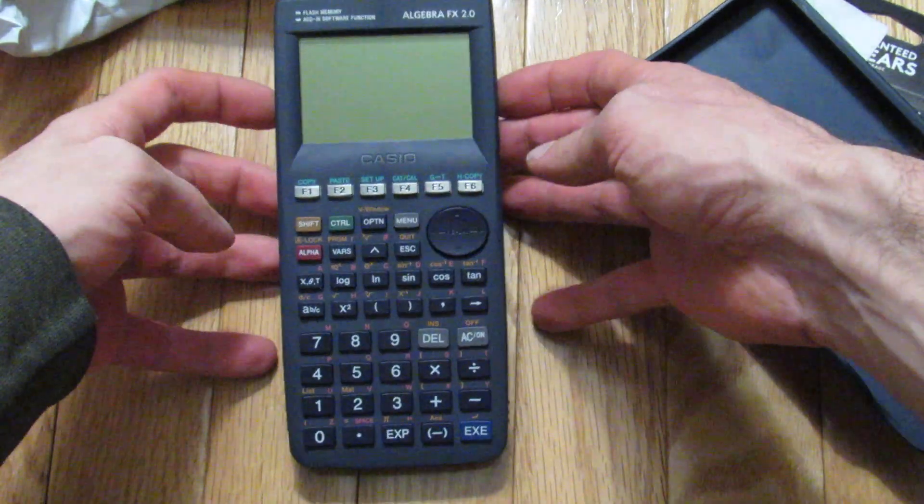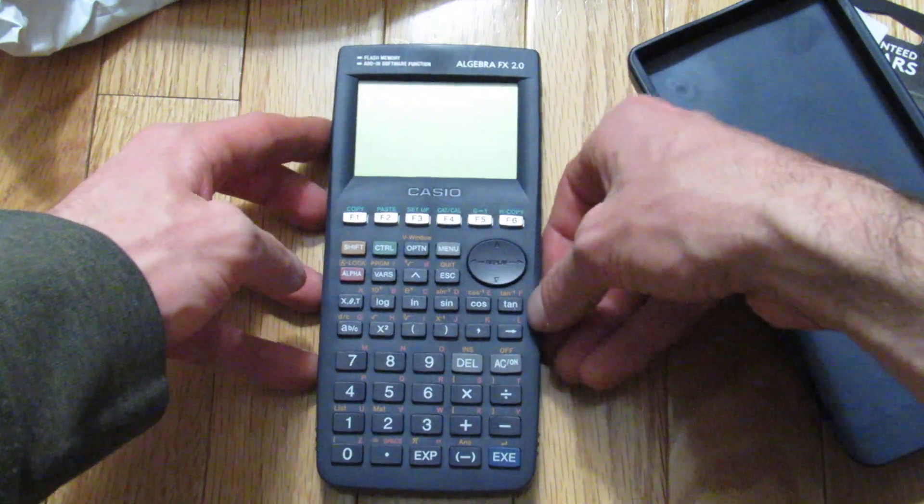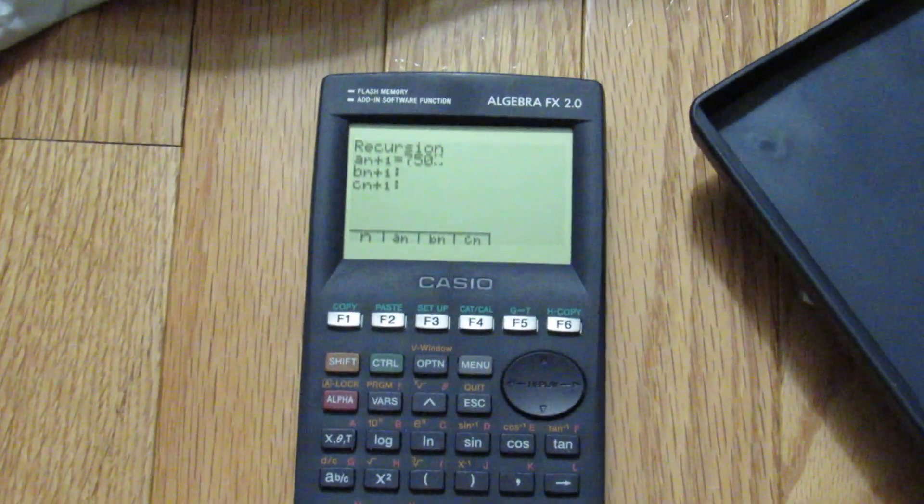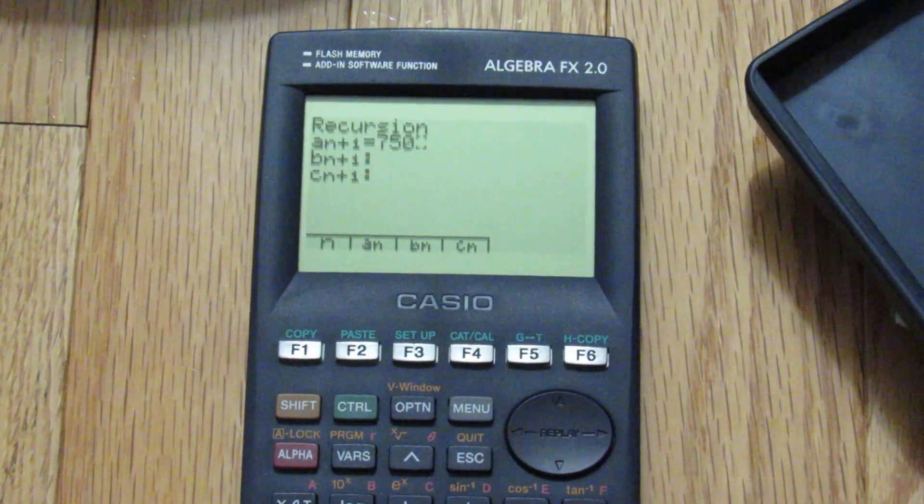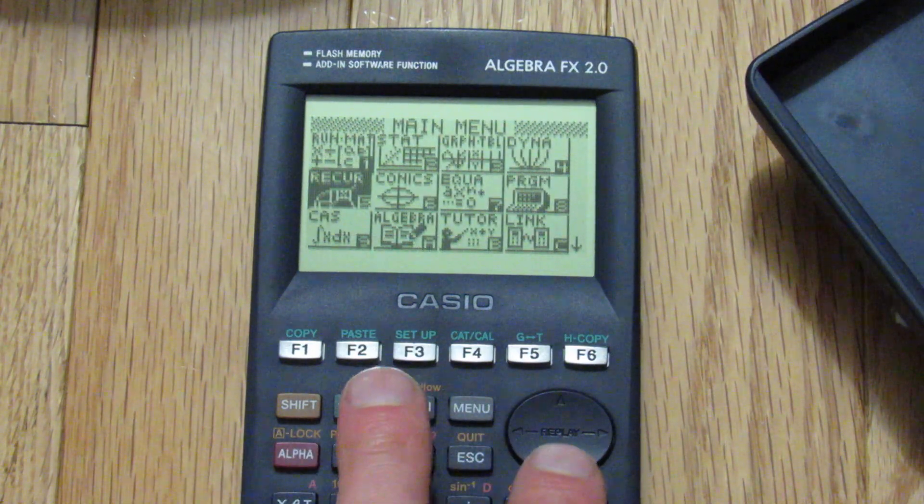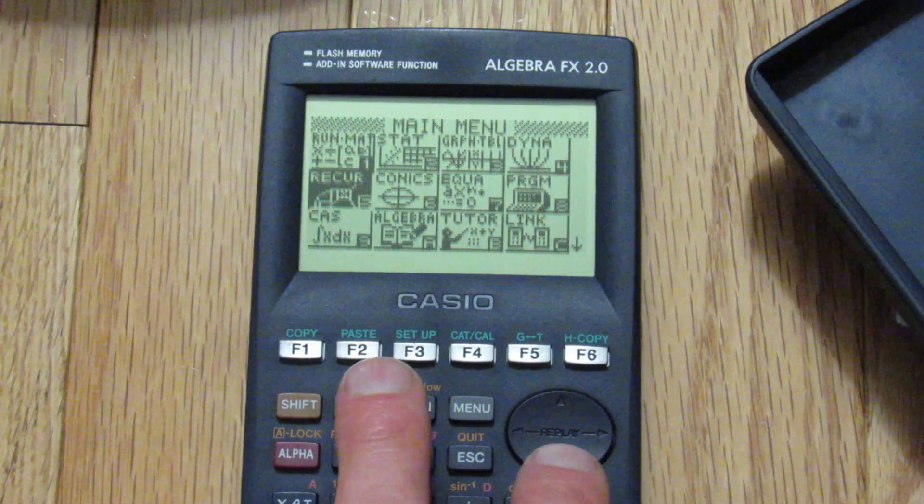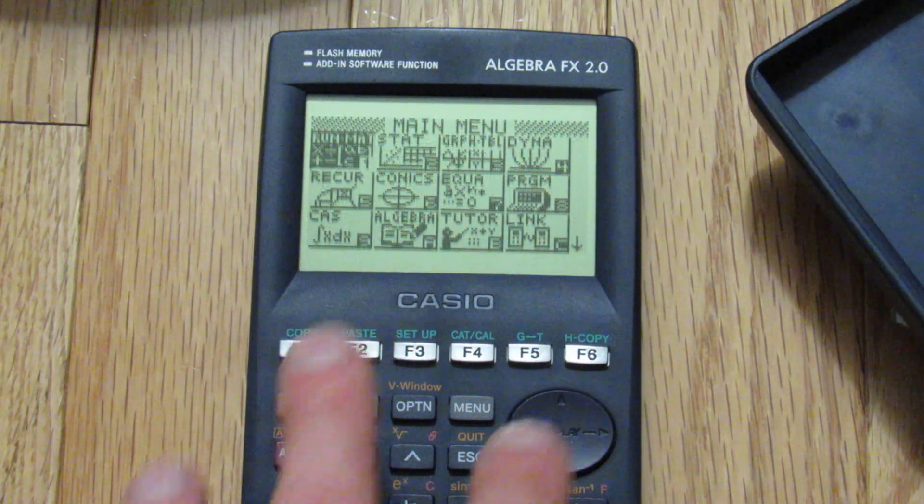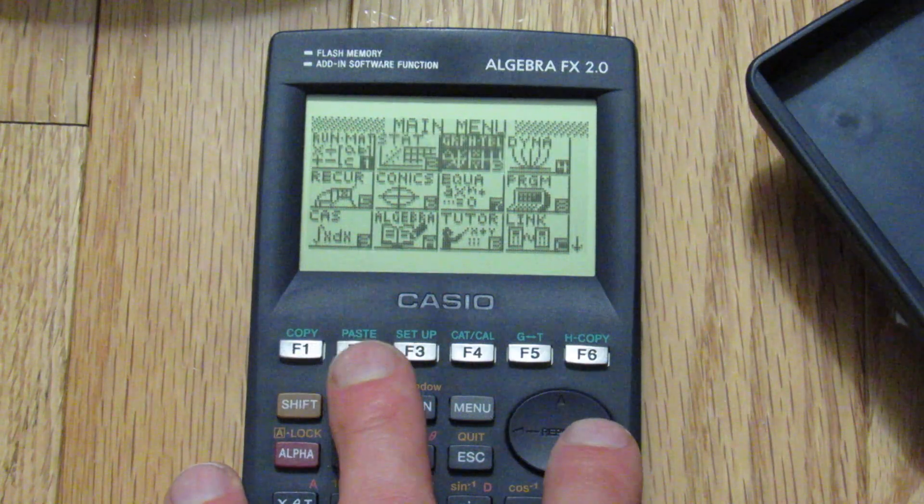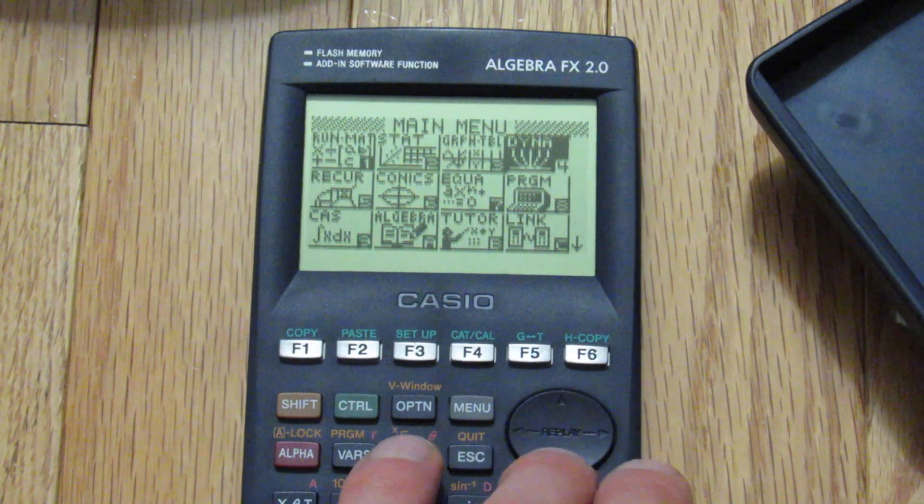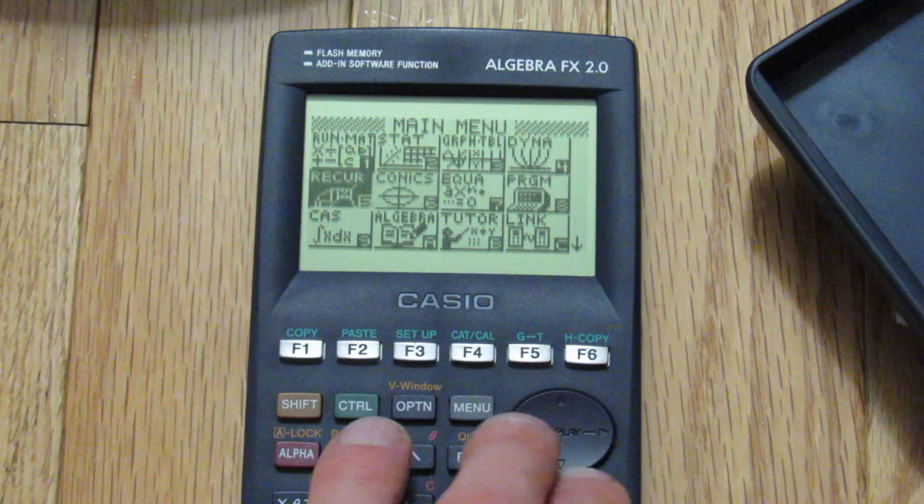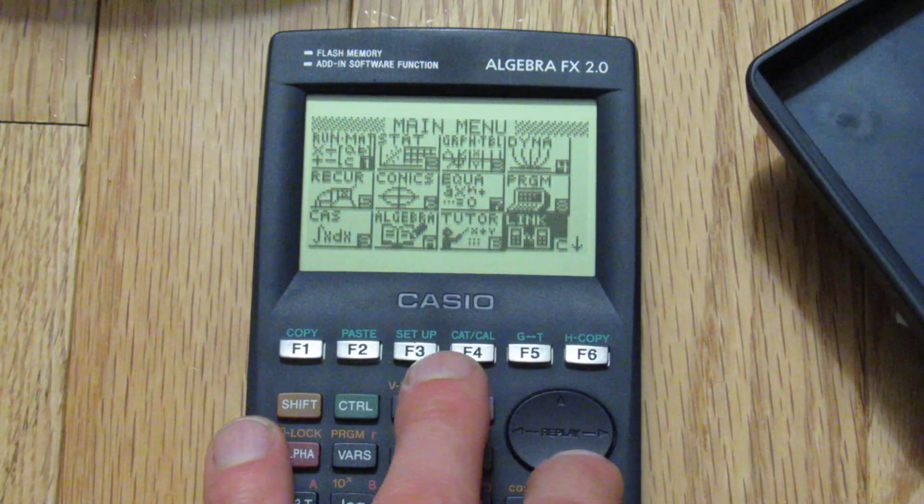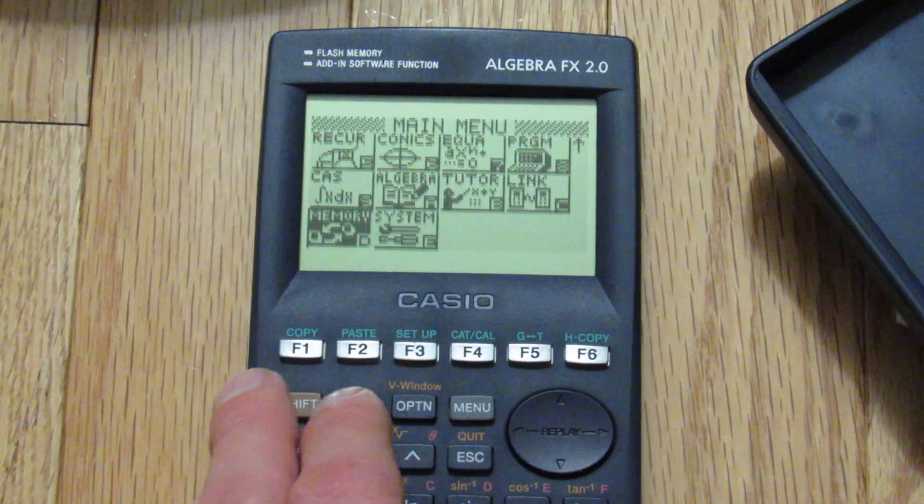Let me just see if I tilt this here if it looks any different. Okay so I'll go ahead and turn it on and indeed I got this with working batteries. Let's go to the menu. That's kind of a nice resolution I'd say there. Let's look at all the options we have. Run math, statistics, graph table, not sure what Dyna is. Programming, equations, conics, recursion, computer algebra system, algebra, tutor, software link, system, and memory.